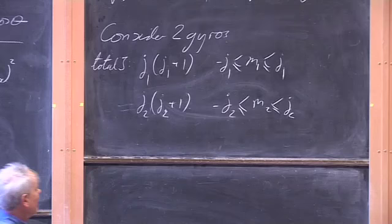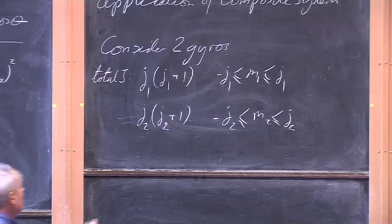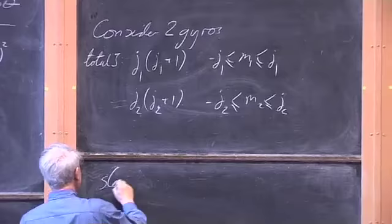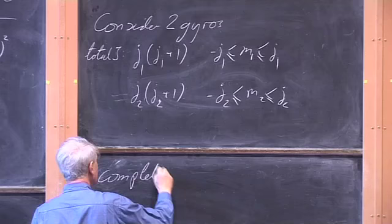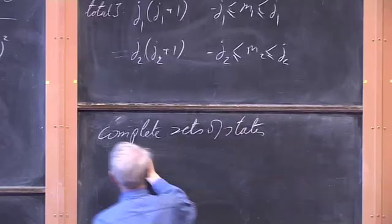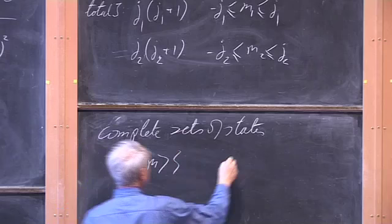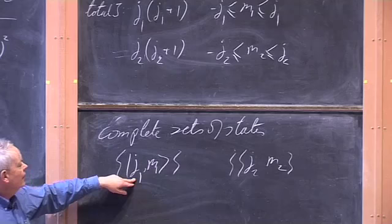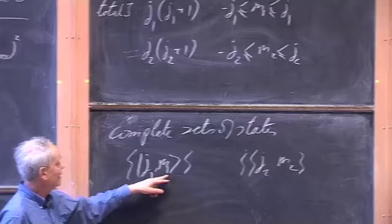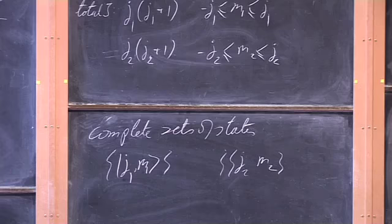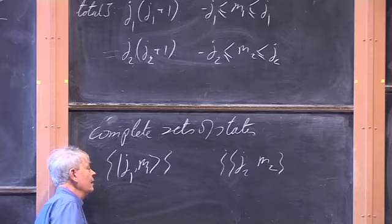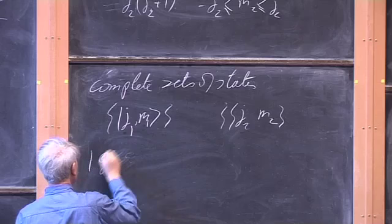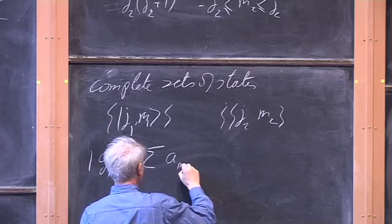We have two complete sets of states: |J1, M1⟩ with M1 ranging between minus J1 and J1, and |J2, M2⟩ with M2 between minus J2 and J2. Any state of gyro one can be written as a sum over M1 of A(M1)|J1, M1⟩, et cetera. We've discussed that for composite systems, a complete set of states is obtained by taking members of the complete set of A and multiplying by members of the complete set of B, and taking linear combinations of those gives you everything.